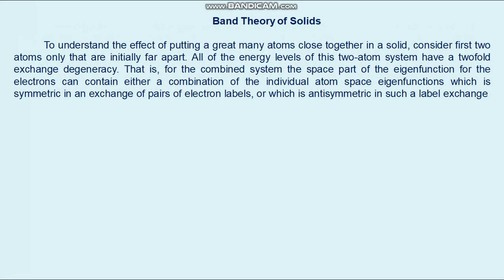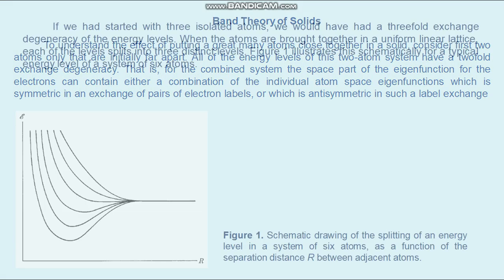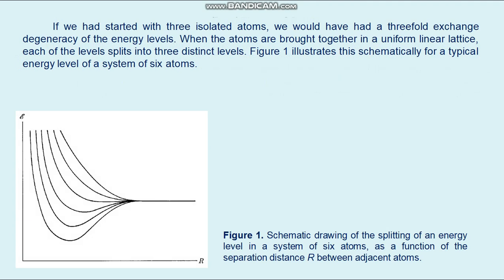A foremost example of this phenomenon is found in the ground state energy level of the system containing two hydrogen atoms. Each of the higher levels of the system splits in the same way as atoms are brought together. If we had started with three isolated atoms, there would be a three-fold exchange degeneracy. When brought together in a uniform linear lattice, each level splits into three distinct levels. Figure one illustrates this schematically for a typical energy level of a system of six atoms.